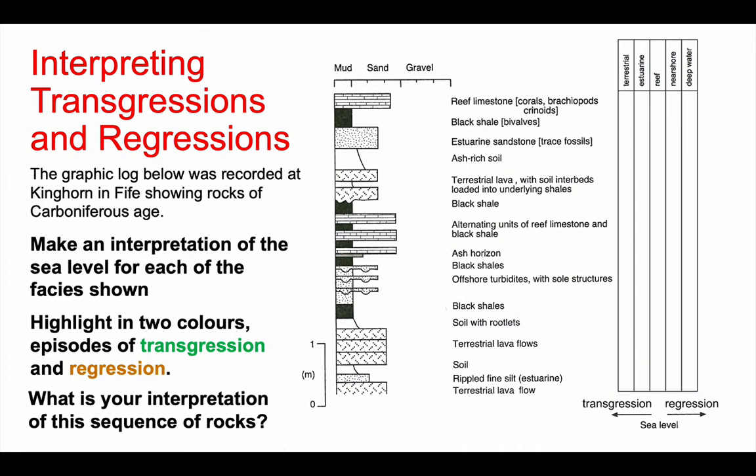Now, the way I'd like you to show your sea level is I'd like you to plot it as a line graph. Starting from the bottom there, we can see we have a terrestrial environment. That then changes to an estuarine one, so we're moving our line to the right.